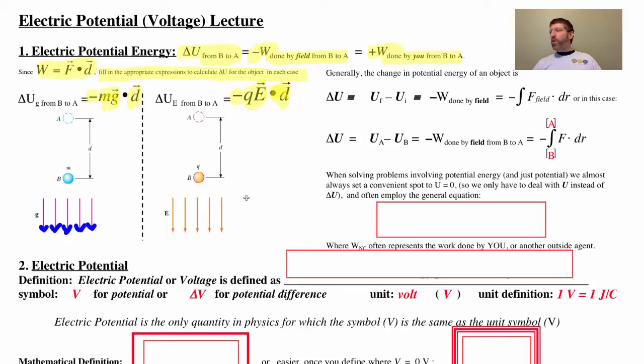So, in general, the change in potential energy of any object is just defined as U final minus U initial, the opposite of the work done by the field. If you're using calculus, that will be the negative of the force the field exerts dotted on D, or the integral of that.